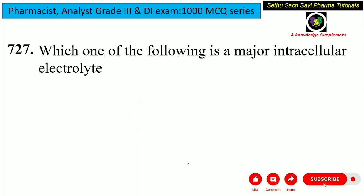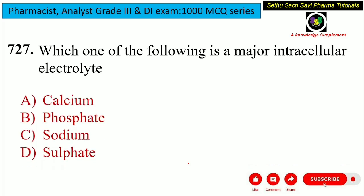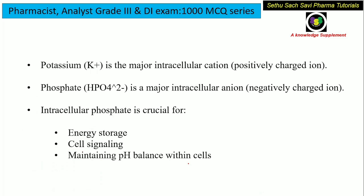Which of the following is a major intracellular electrolyte? Intracellular electrolyte means it can be an intracellular cation or intracellular anion. The options are: calcium, phosphate, sodium or sulfate.